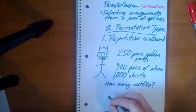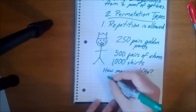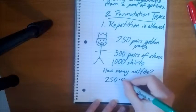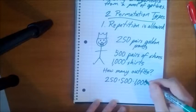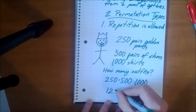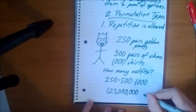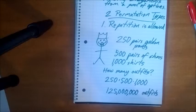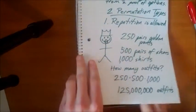The way you would find out is using what we call the multiplication principle. And all you have to do is multiply these all together. Pretty simple. So you have 250 pairs of golden pants times 500 pairs of shoes times 1,000 shirts. Do the math, and it comes out to 125 million different outfits. So I'm pretty sure he wouldn't have time in all of his life to wear all those different combinations. Unfortunately for King Rich Pants. But hey, he's a king. What more could he ask for?